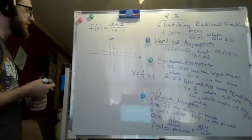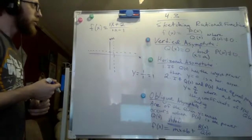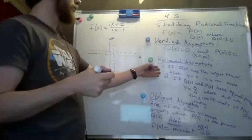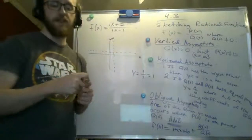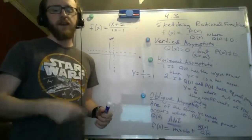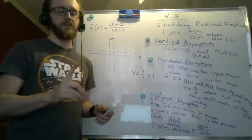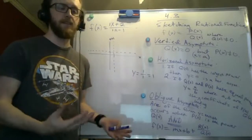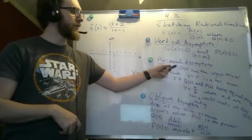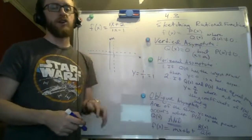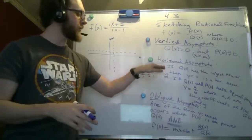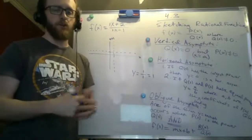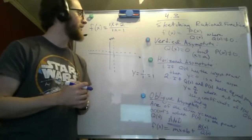Now we're ready to complete the rest of this problem. One thing to note: a rational function can have at most one horizontal asymptote. So don't worry about missing others — when it comes to rational functions, there can only ever be one horizontal asymptote. Once you find it, you don't need to worry about it.